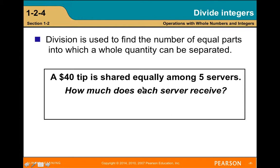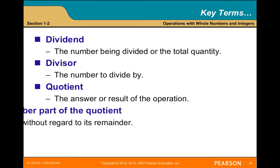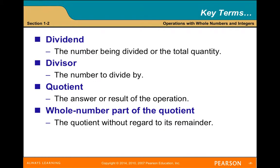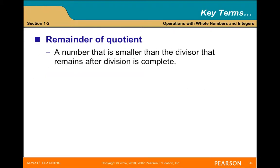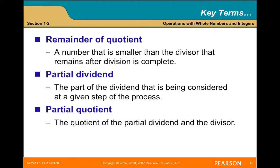Division is used to find the number of equal parts into which a whole quantity can be separated. For example, a $40 tip shared equally among five servers: 40 divided by 5 equals $8 each. Key terms: the dividend is the total quantity being divided; the divisor is the number to divide by; the quotient is the answer; the remainder is a number smaller than the divisor that remains after division is complete; the partial dividend is the part of the dividend being considered at a given step; and the partial quotient is the quotient of the partial dividend and divisor.